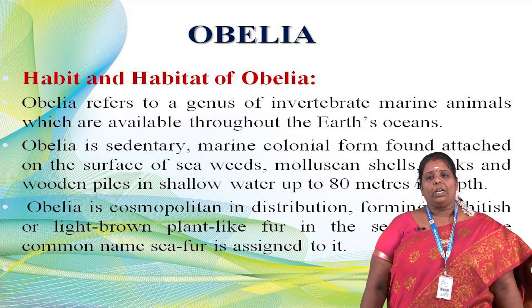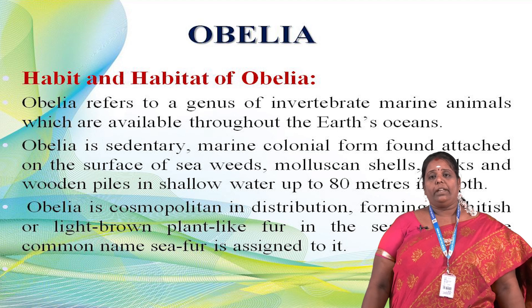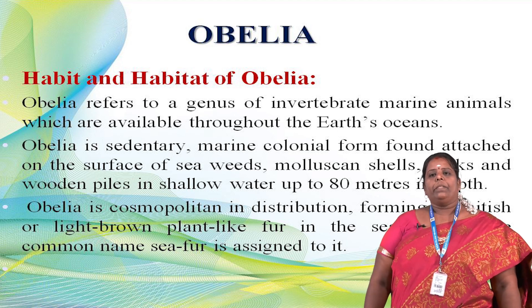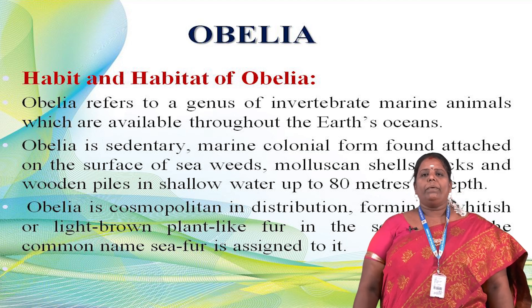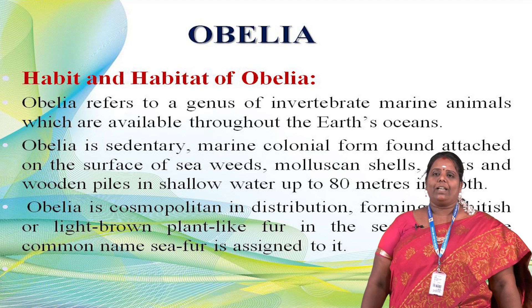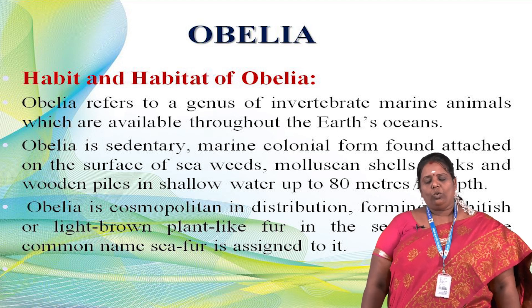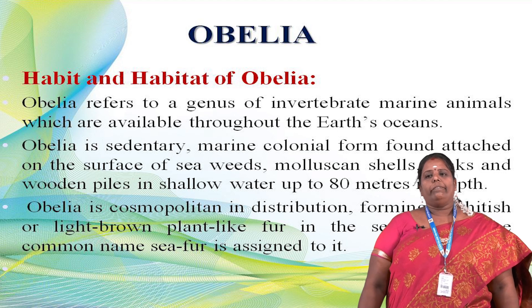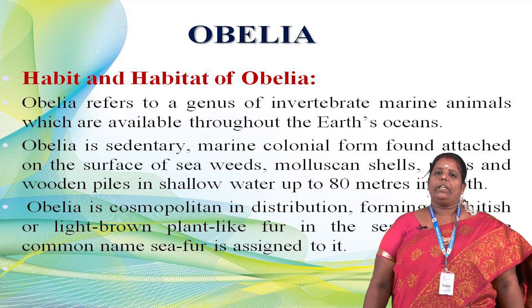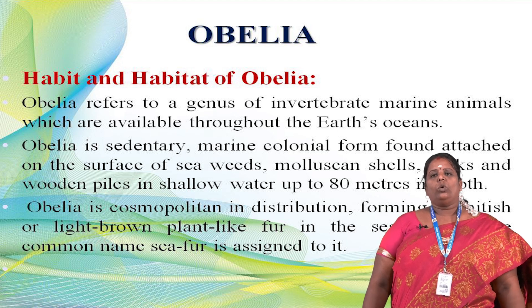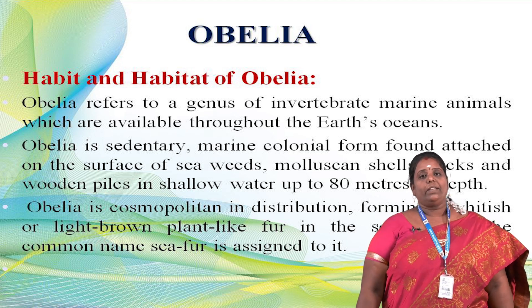Obelia is found on rocks, wooden piles, and in shallow water — living up to 80 meters depth in marine water. Obelia is cosmopolitan in distribution, found everywhere in particular marine places. Its color is whitish or light brown. It has a plant-like structure, but it is an animal. We therefore call it 'sea fur.' The common name 'sea fur' is assigned to Obelia because it looks like a plant structure found in the sea.